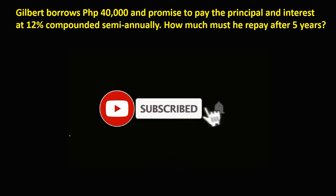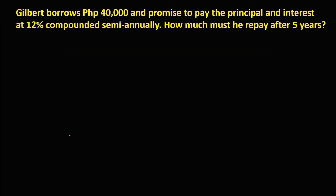Let's solve this problem. Gilbert borrows 40,000 pesos and promised to pay the principal and interest at 12% compounded semi-annually. We need to find how much he must repay after five years, so we're looking for the future value. First, let's list all the given information. Since Gilbert borrows 40,000 pesos, this is the principal amount. The rate is 12%, which in decimal is 0.12.